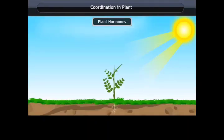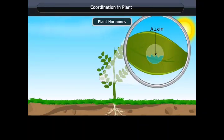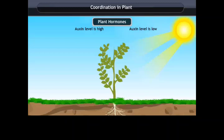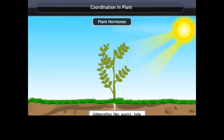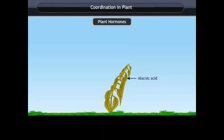Plant Hormones. When growing plants detect light, a hormone called auxin, synthesized at the shoot tip, helps the cells to grow longer. When light comes from one side, auxin diffuses towards the shady side of the shoot, stimulating cells on the side away from the light to grow more, so the plant bends towards the light. Gibberellins, like auxins, help in the growth of the stem. Cytokinins promote cell division and are found in greater concentration in areas of rapid cell division such as fruits and seeds. Abscisic acid is a hormone that inhibits growth, and its effects include wilting of leaves.